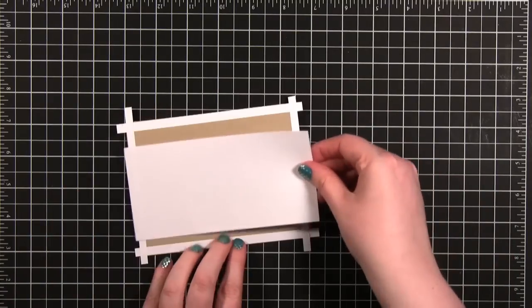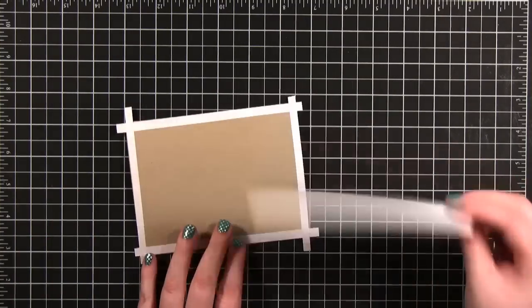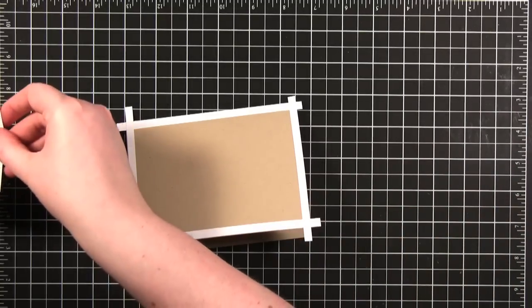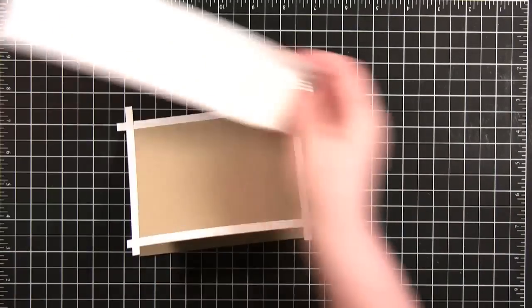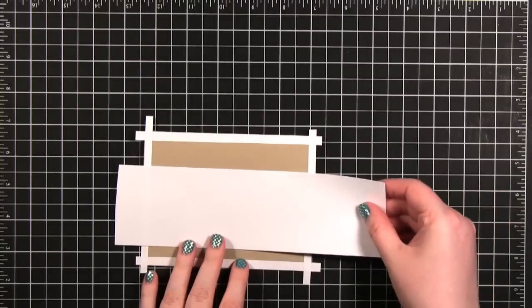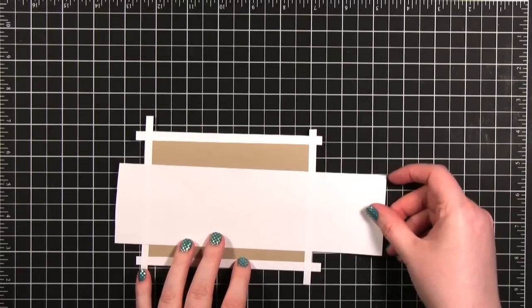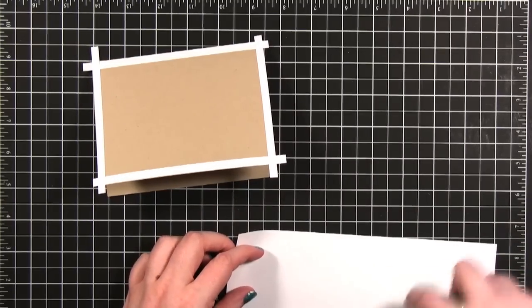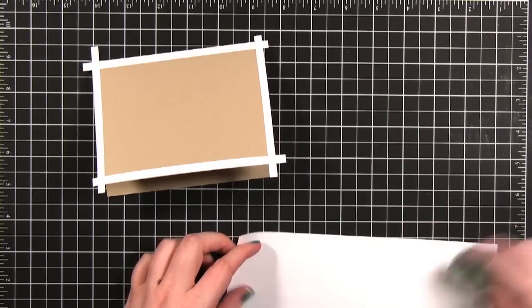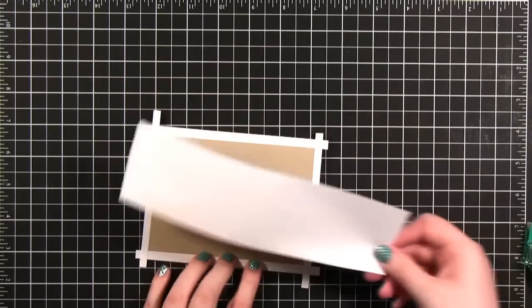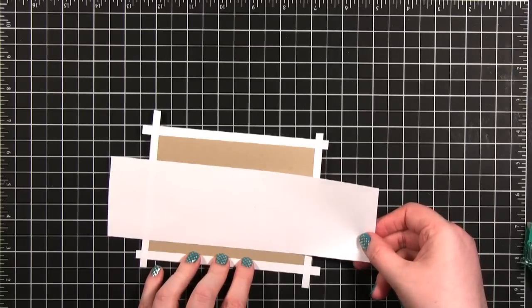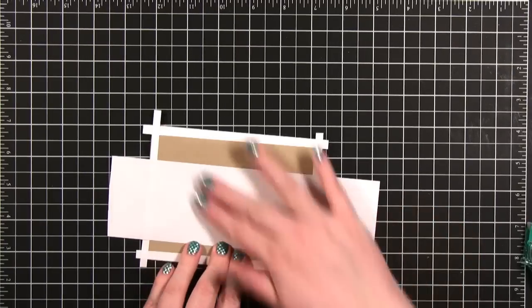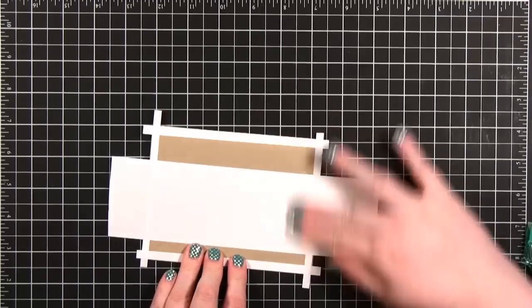I also have this piece right here. Actually, is that the right one? No, that's not the right one. This is the right one. I've got this piece here that I'm going to put over just lower than center on the card. I'm just going to press that down.